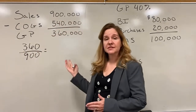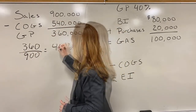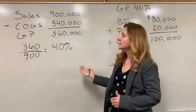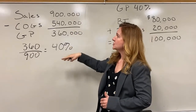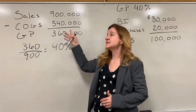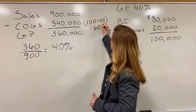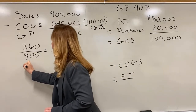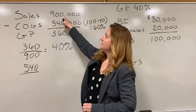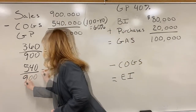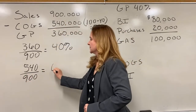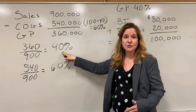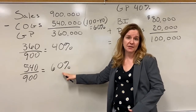So the gross profit percent in this example is 40%. Then we calculate cost of goods sold as a percent of sales — that's 100 minus 40, which is 60%. We can also verify this by taking cost of goods sold of $540,000 and dividing it by sales of $900,000, which also gives us 60%.